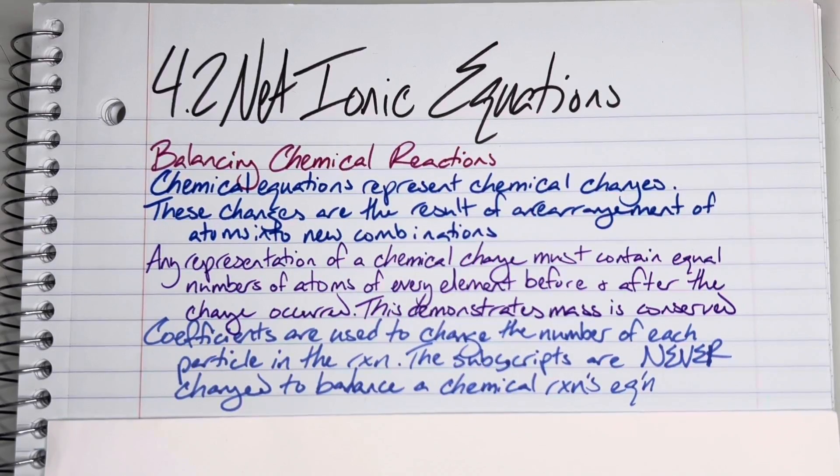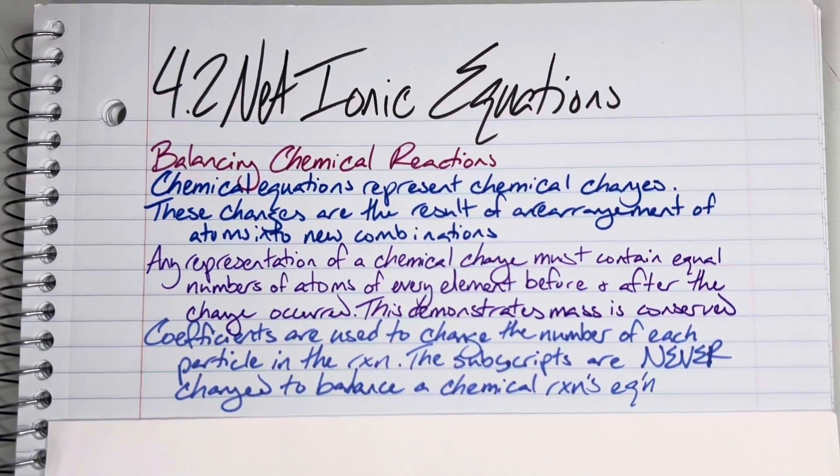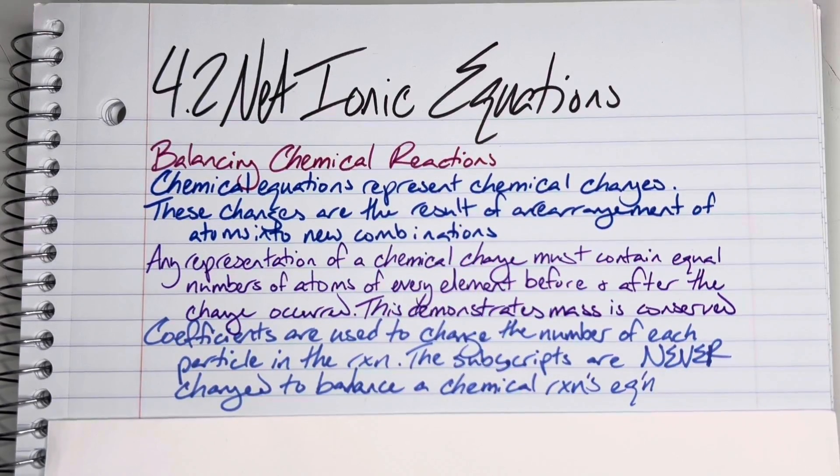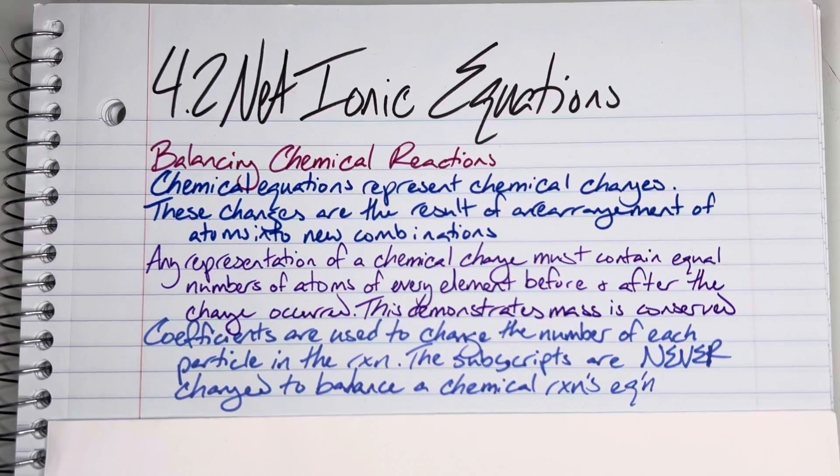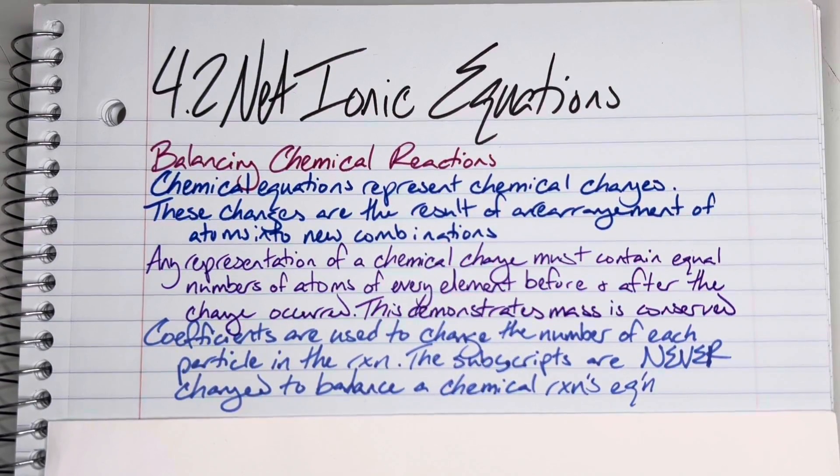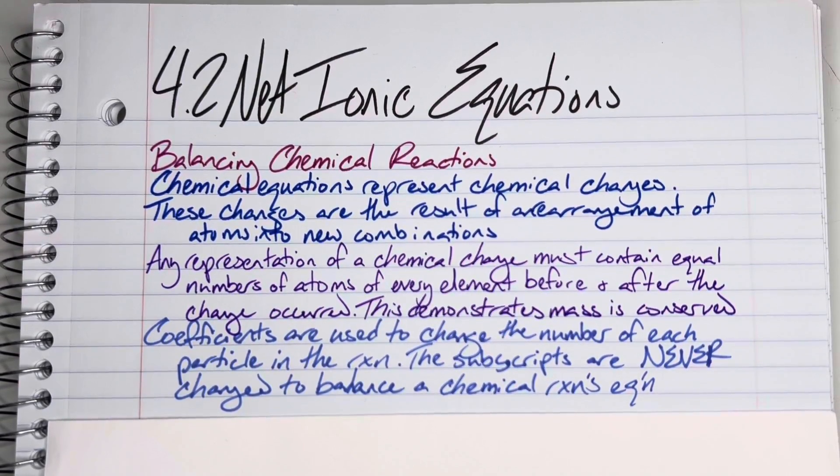The way you're able to do this is by utilizing coefficients. Coefficients are used to change the number of each particle within the reaction. You can change how many particles you have, but you cannot change the subscripts. The subscripts are never changed in order to balance a chemical reaction's equation.